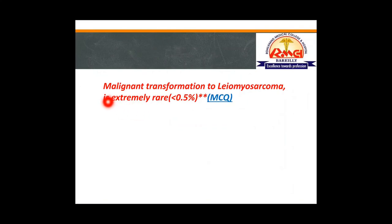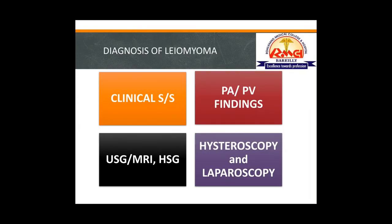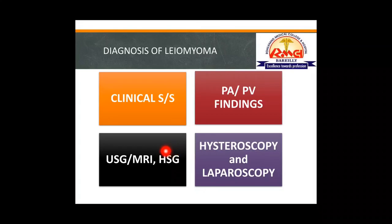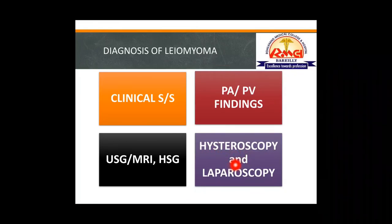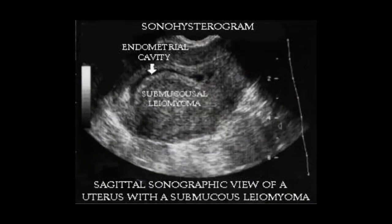An important MCQ and viva point: leiomyoma progresses to leiomyosarcoma in extremely rare cases — less than 0.5% of cases. Diagnosis is made through signs and symptoms, per-abdominal and per-vaginal findings, radiology (ultrasound, MRI), hysterosalpingography (dye injection visualized by X-ray), hysteroscopy to visualize the endometrial cavity, and laparoscopic examination. Ultrasound can show a submucosal leiomyoma as a mass adjacent to the endometrial cavity.